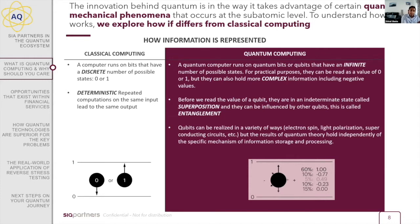In classical computing, a computer runs based on these building blocks of discrete numbers — zeros or ones. It performs deterministic and repeated computations: the same input will give you the same output. Each bit of information is always either zero or one. In quantum computing, the paradigm is quite different.